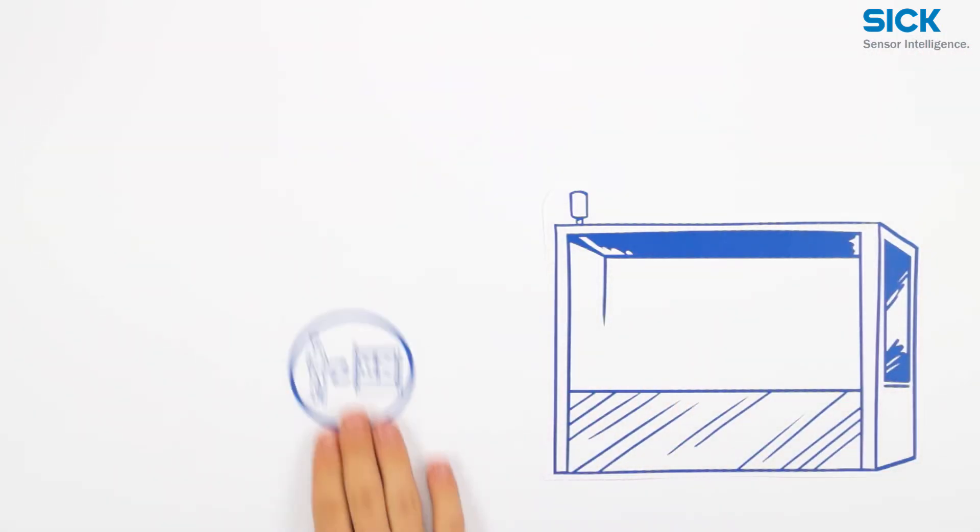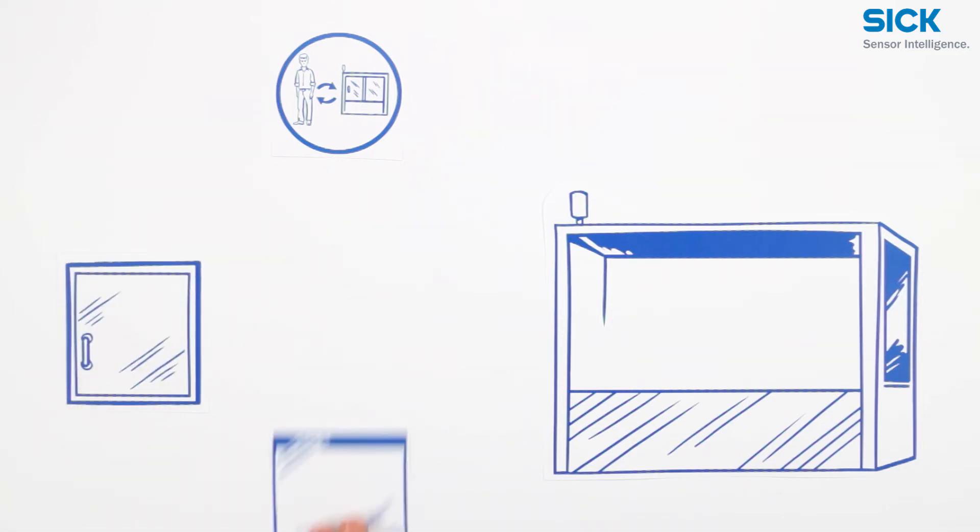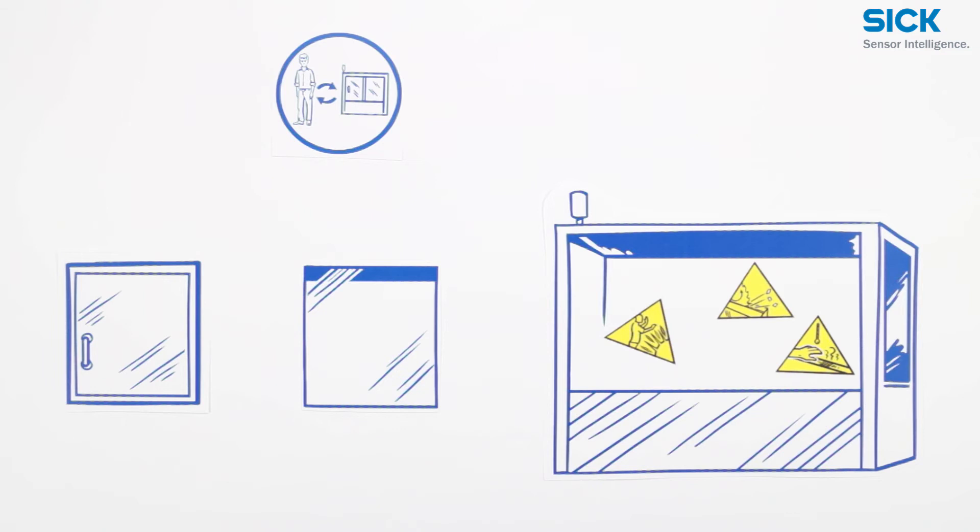For applications with less frequent interaction between the machine and operator, physical guards such as protective doors and covers might be the better choice. In fact, they are inevitable when hazards such as ejected parts, heat, or radiation must be physically isolated.